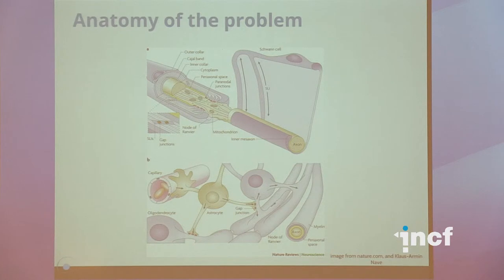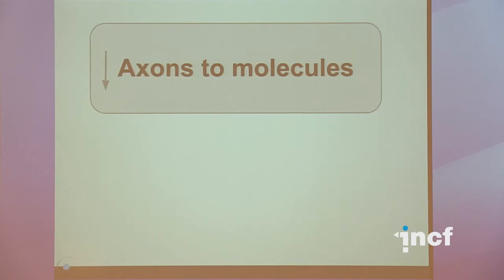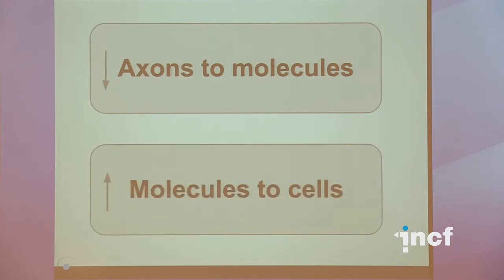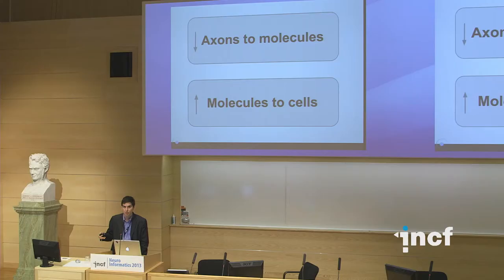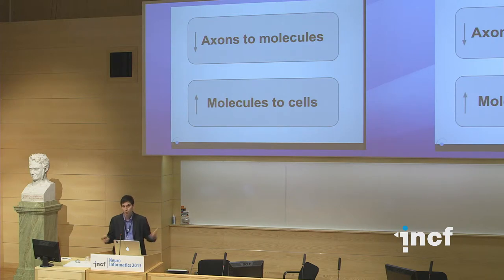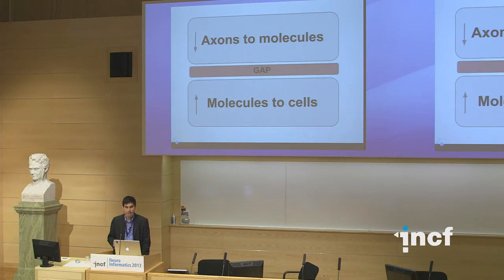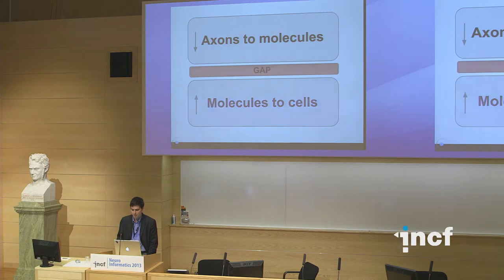There's quite a bit going on in terms of the internals of these cells. That takes us from axons to molecules. Now we want to go from molecules up to cells — moving from the realm of computational neuroscience into computational biology. Let's take a brief tour of what's happening in computational biology. There's going to be a gap, and that's the state of where things are, but let's accept that and talk about how we address it in the next section.